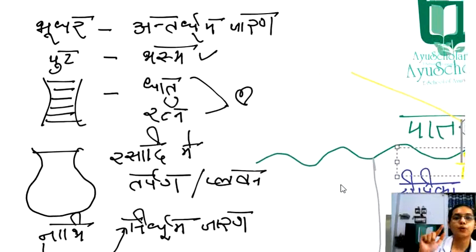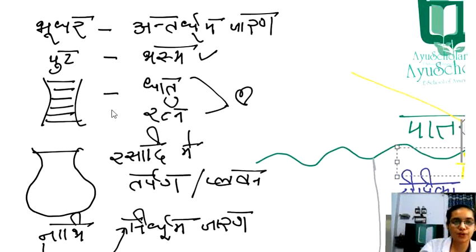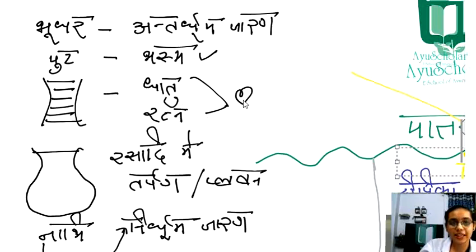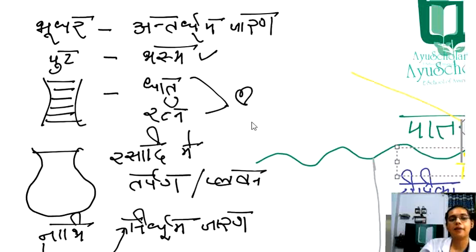Koshthi is used for Dhatu, Ratna, and Sattva — remember Koshthi Yantra for these three purposes.